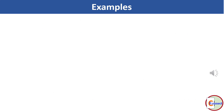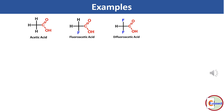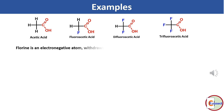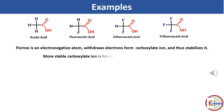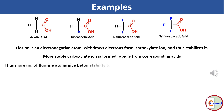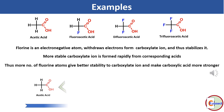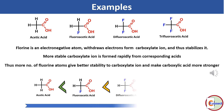In this example, we take acetic acid, fluoroacetic acid, difluoroacetic acid, and trifluoroacetic acid. Fluorine is an electronegative atom that withdraws electrons from the carboxylate ion and thus stabilizes it. A stable carboxylate ion is formed rapidly from the corresponding carboxylic acid. Thus a greater number of fluorine atoms gives better stability to the carboxylate ion and makes the carboxylic acid stronger. Hence acetic acid has the lowest acidity because it has no fluorine atom, while trifluoroacetic acid shows the maximum acidity because it has three fluorine atoms.